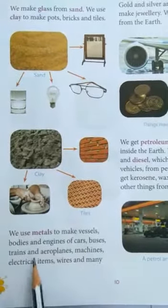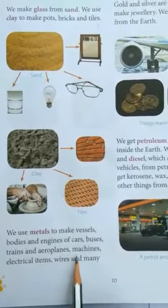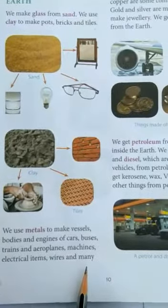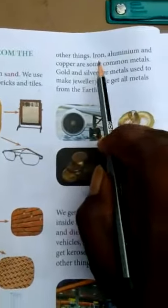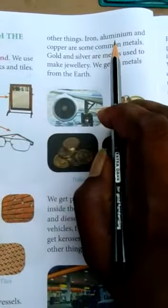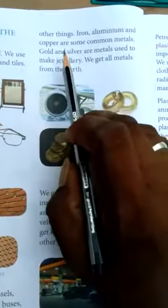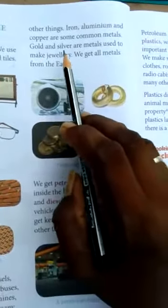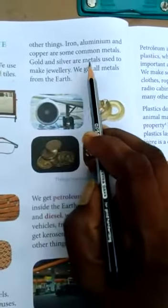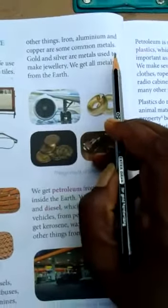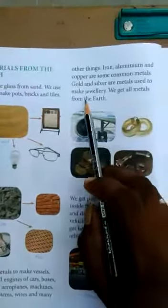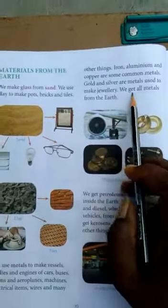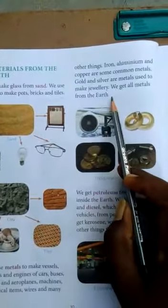Of course, buses, trains and aeroplanes, machines, electrical items, wires and many other things. Iron, aluminum and copper are some common metals. Gold and silver are metals used to make jewelry. We get all metals from the earth.